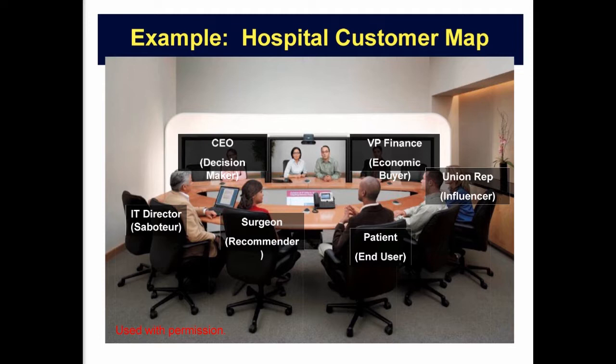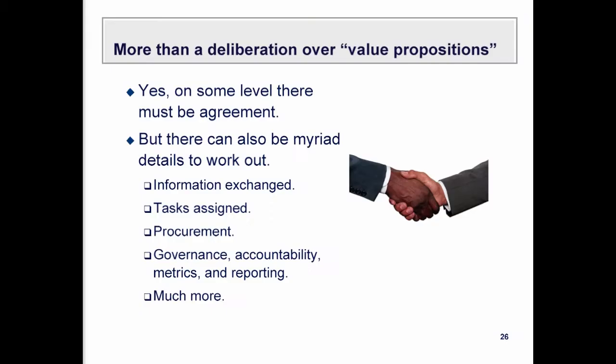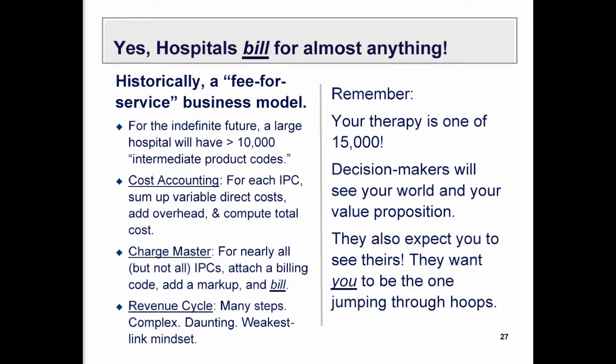Getting your therapy approved and in use requires all of these various parties to weigh in. They're weighing in partly on the value proposition, but a lot of what they're considering is just the logistics — will Blue Cross accept and reimburse this, and what do we have to do to get it reimbursed? At a hospital the size of the University of Michigan there are 15,000 or more intermediate product codes, and your therapy is going to be one of those 15,000.